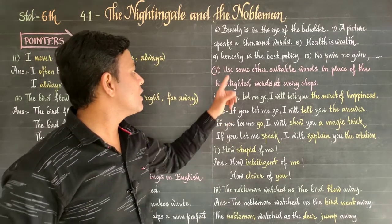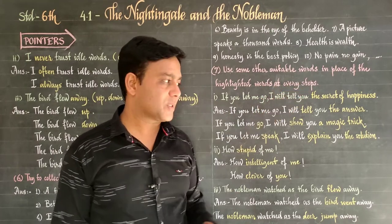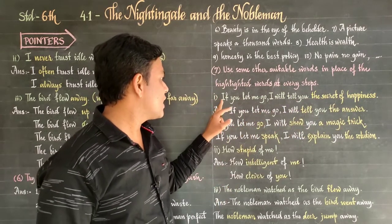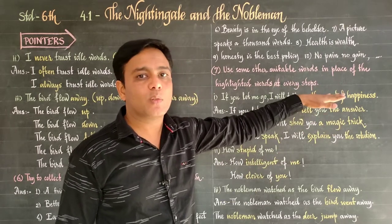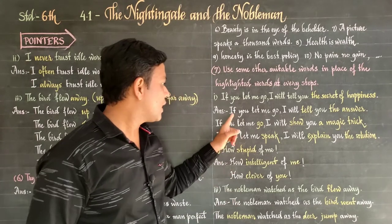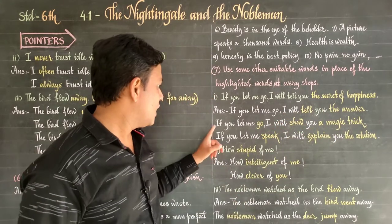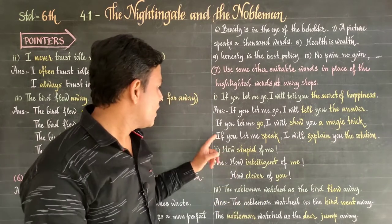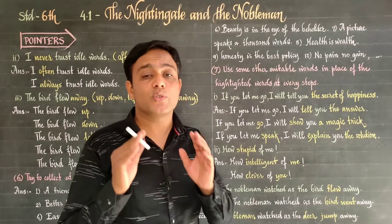Question number seven: use other suitable words in place of the highlighted words at every step. The original sentence is: if you let me go, I will tell you the secret of happiness. Step by step, replace highlighted words: if you let me go, I will tell you the answer; if you let me go, I will show you a magic trick; if you let me speak, I will explain you the solution.